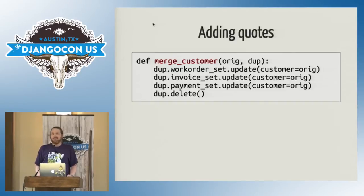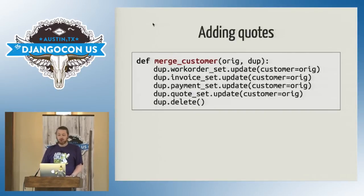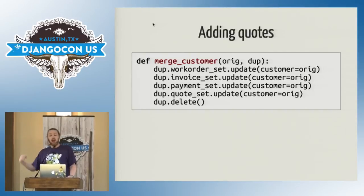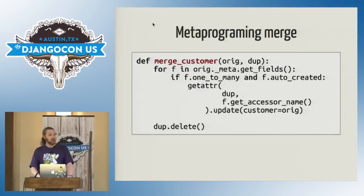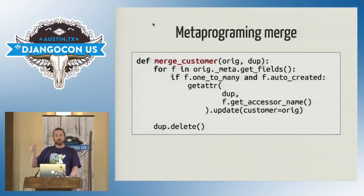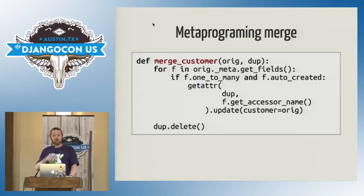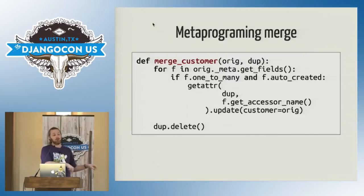Oops. The first obvious solution is to update your merge mechanism, add the extra line you need for quotes — and that will work fine until you then add an appointments model to keep track of each appointment with your customer, and so on and so on. What you really need is something that will adapt to any new model as you add it. And how do you do that? You metaprogram. Rather than encoding the models that need to be updated, you use the metamodel to discover all the related models and then update them. That way, when a new model comes along with a foreign key to customer, it will automatically be included in that merging operation.